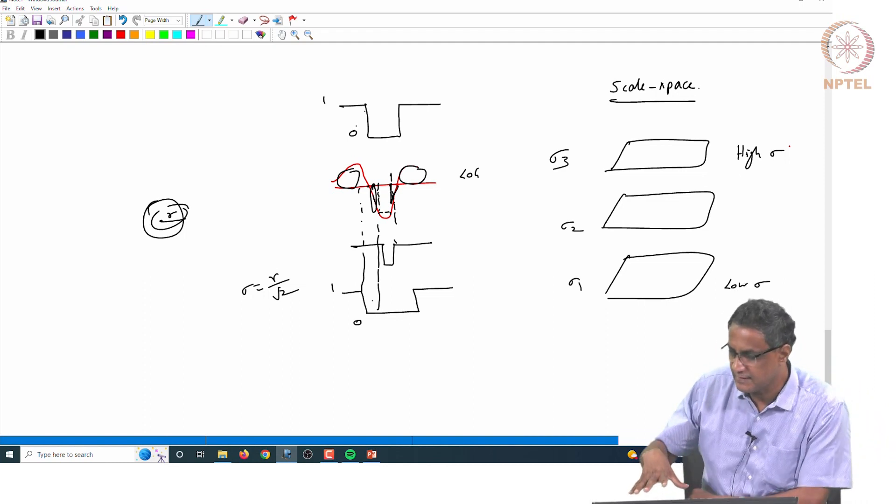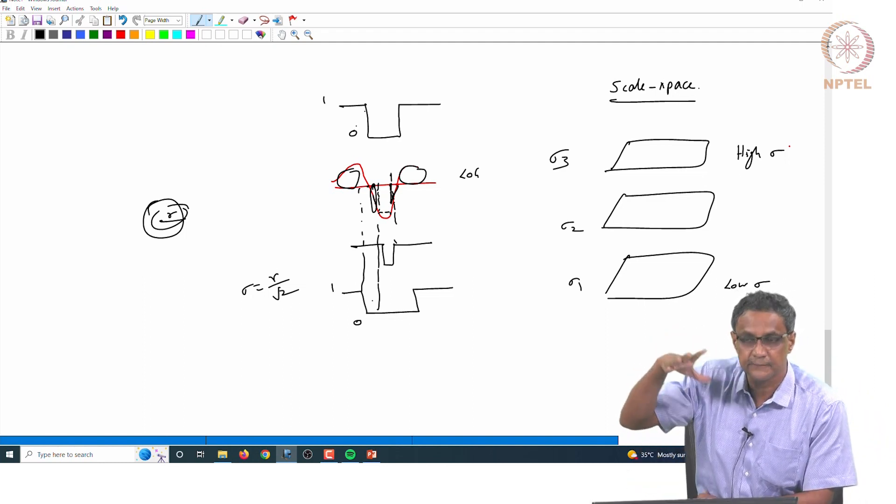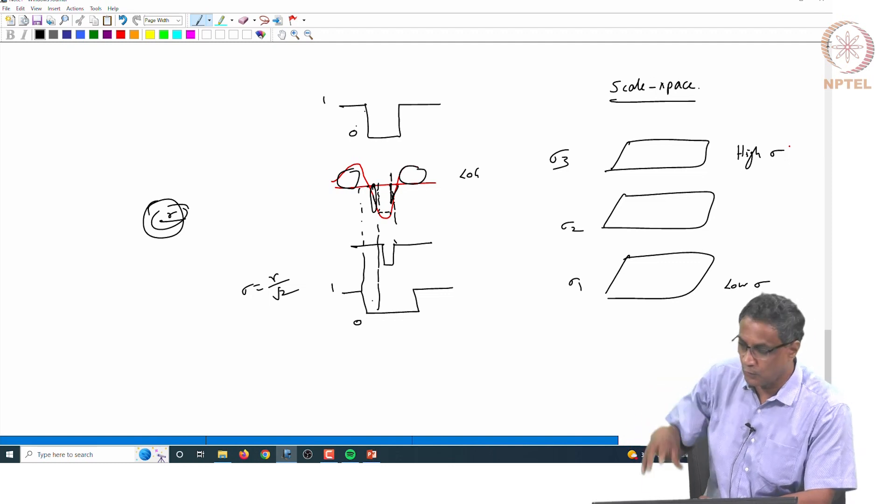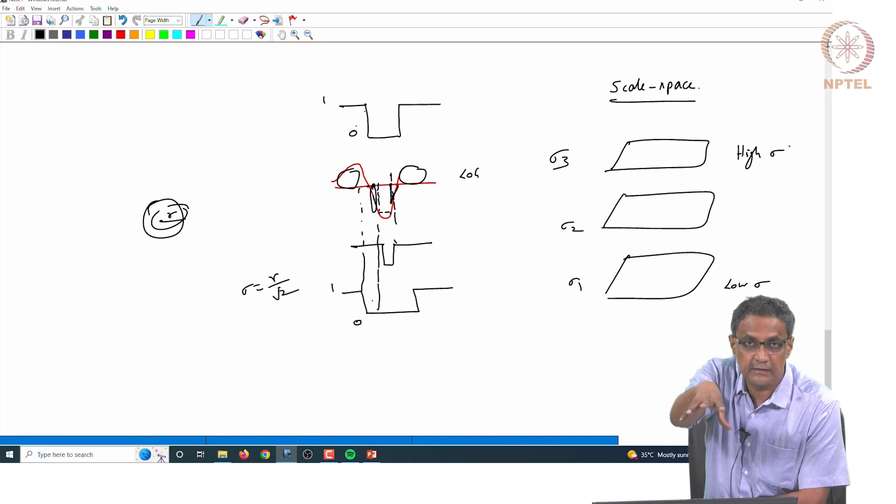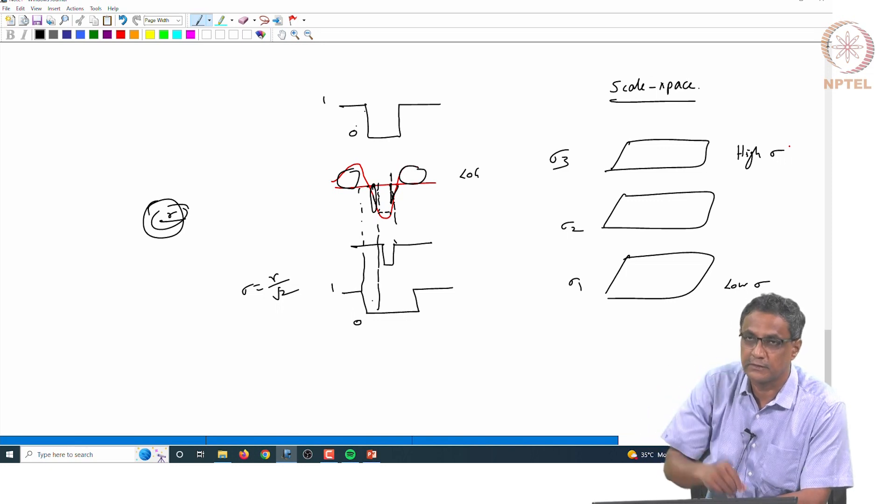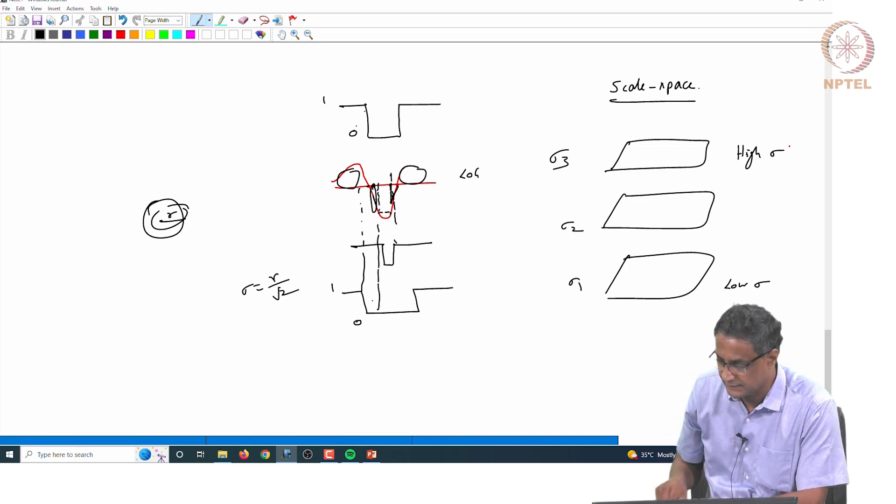What is now done is you examine at various scales. So you go from a low sigma, then a higher sigma, and then you hope that at some place, something when it actually matches the scale, it will glow in a sense.